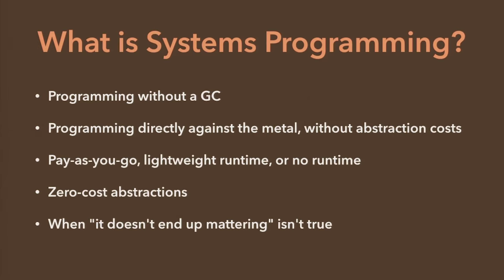So here are some things that to me define what system programming is. First of all, programming without a GC. Once you insert a GC into things, there may be some hypothetical future world where the GC gets sufficiently fast, sufficiently low impact, sufficiently real-time, and low enough overhead that you can write systems code with a GC — but in practice that is not true today for most people writing in most languages.